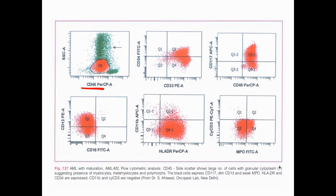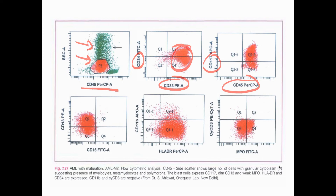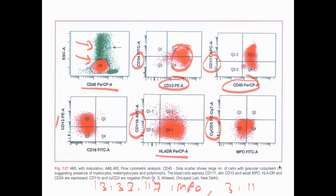On flow cytometry for AML M2: CD45 shows two populations. Positive markers include CD33, CD34, CD45, CD117, CD13, and HLA-DR; CD11 is negative, CD3 is negative. Conclusion: CD13, CD33, CD117 positivity and MPO positivity — myeloid markers positive; lymphoblastic markers (CD3, CD11) are negative. This confirms AML M2.